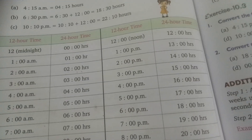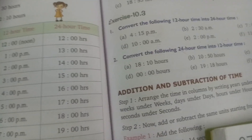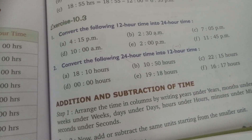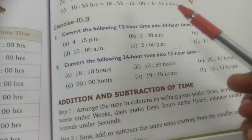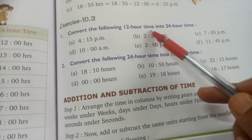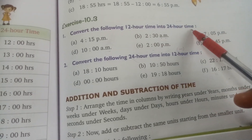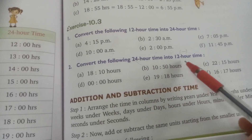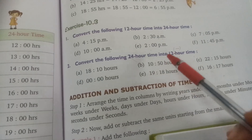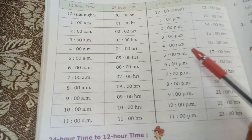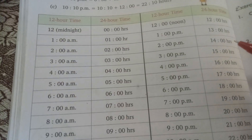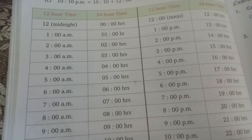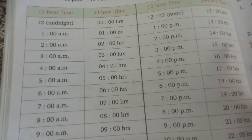Good morning everyone, welcome. Today we are going to solve Exercise 10.3. In this exercise we have to convert 12-hour time into 24-hour time, as well as from 24-hour time to 12-hour time. There is one table given in the book which is very important to understand, and it makes these questions much easier to calculate.